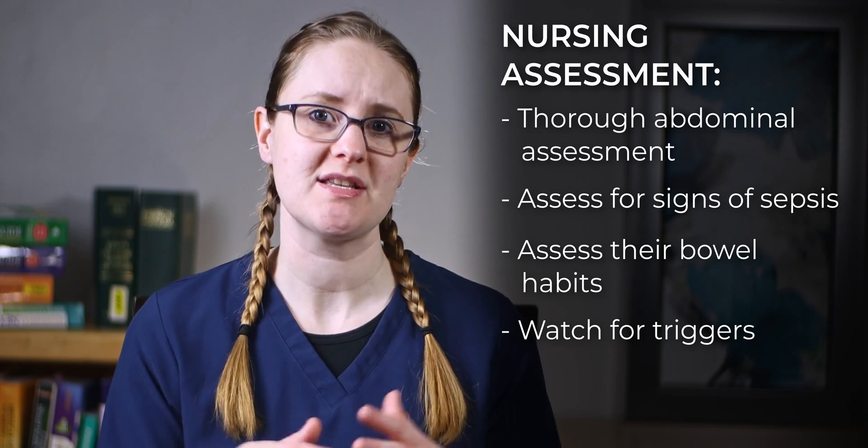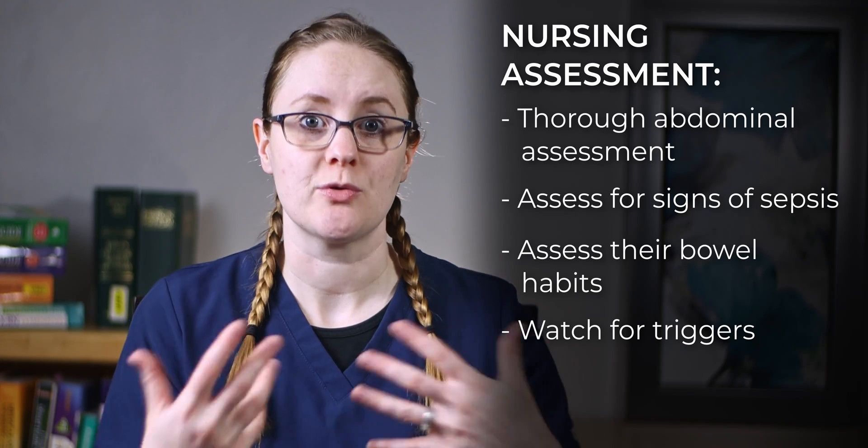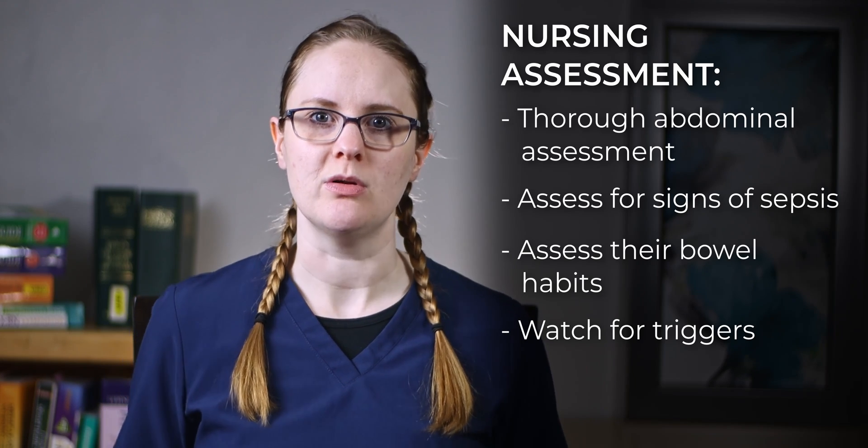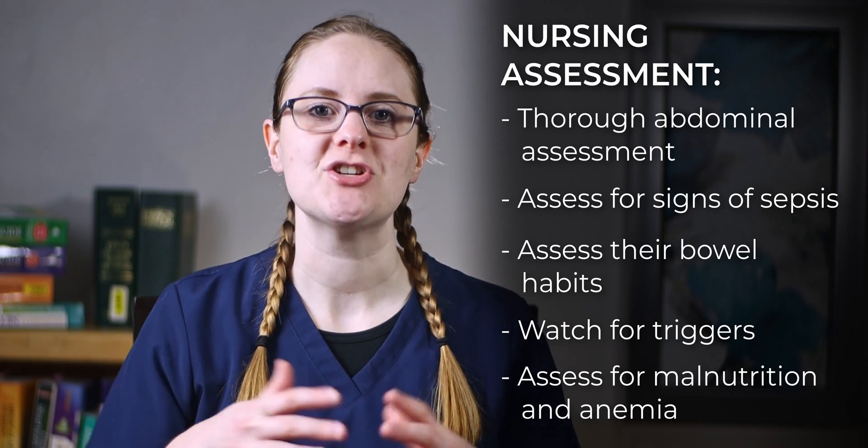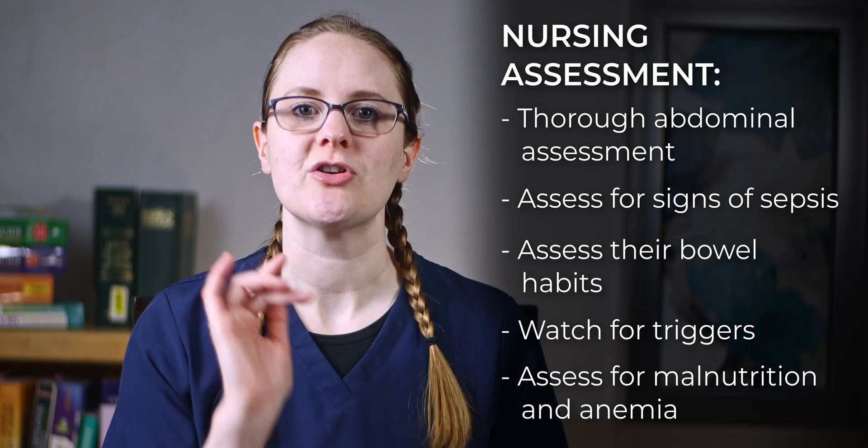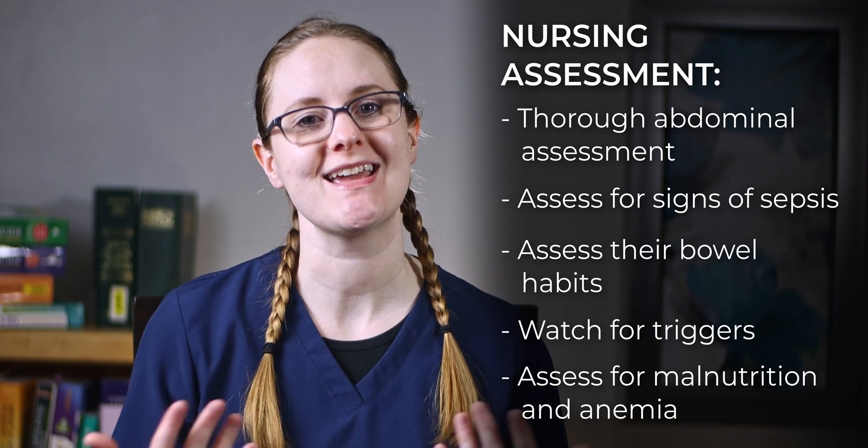Since the patient may be nauseous and not eating as much, along with decreased absorption of nutrients in the colon, you'll need to assess their daily weights and check their electrolyte, hematocrit, and hemoglobin levels to assess for malnutrition and anemia. If the colon isn't able to take up as much nutrition — particularly iron — they may develop anemia and have a lowered hematocrit and hemoglobin level. Our assessment will be focused on monitoring how the patient is coping with the inflamed and ulcerated colon.